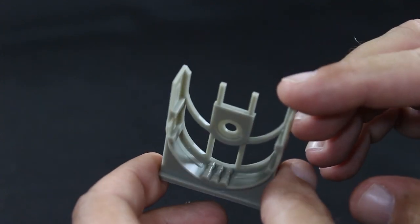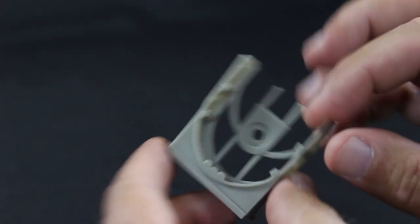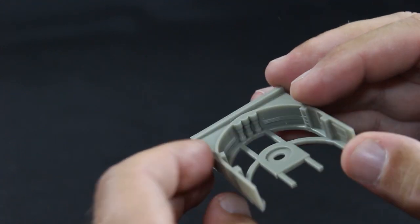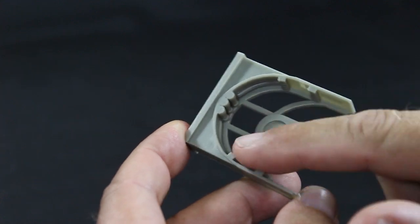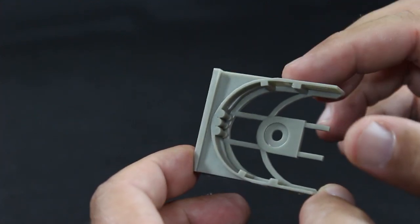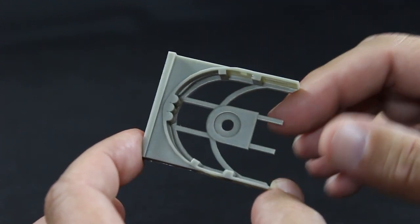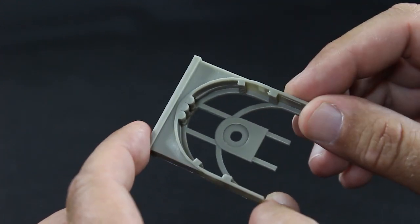This is the same part of the shuttle bay except the top half, pretty much has the same detail on the inside where you add the ladders. The only difference is this doesn't get cut off. This is actually part of the shuttle bay that goes on the top. I would put them together but this also has the big pour stub that I haven't taken off yet.